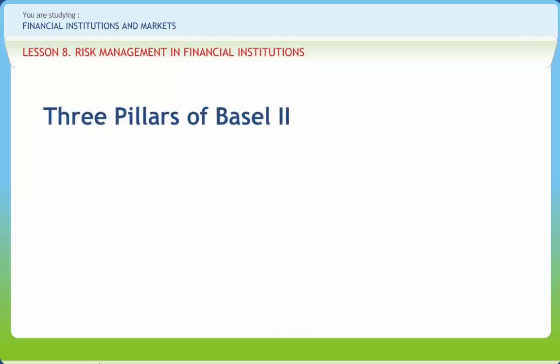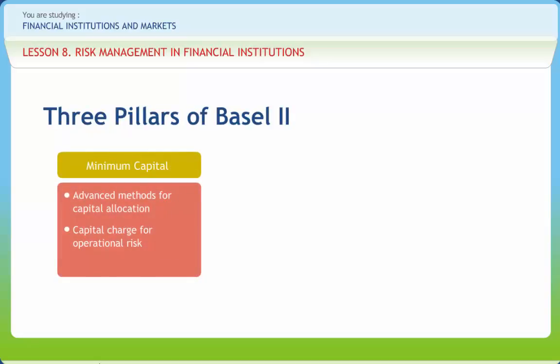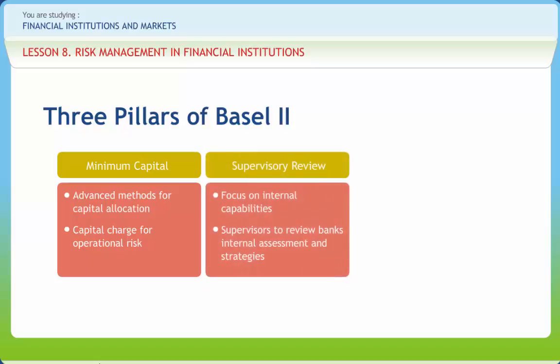The three pillars of Basel 2 are: first, minimum capital charge — minimum capital requirements based on market, credit and operational risk to reduce risk of failure by cushioning against losses, to provide continuing access to financial markets to meet liquidity needs, and to provide incentives for prudent risk management. It is an advanced method for capital allocation. Second, Basel 2 supervisory review focuses on internal capabilities and reviews banks' internal assessment and strategies. It involves qualitative supervision by regulators of internal bank risk control and capital assessment processes, including supervisory power to require banks to hold more capital than required under the first pillar.